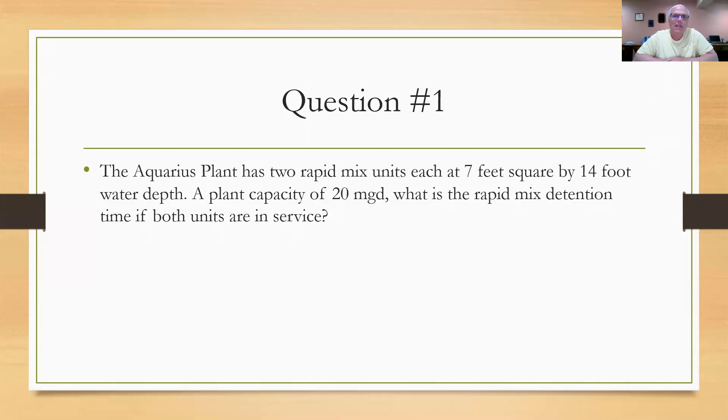So the first question asks us, at the plant we have two rapid mixers and each of them is 7 feet square and 14 feet deep. At a plant capacity of 20 mgd, what is the rapid mix detention time if both units are in service? So again, this is a simple math problem for detention time, which we know always equals volume divided by the flow rate. We're going to use that formula.